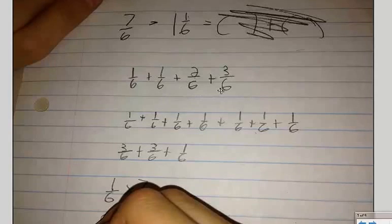1 sixth, 1 sixth, 2 sixths and 3 sixths all make 7 sixths. 3 sixths, 3 sixths and 1 sixth also combine to make 7 sixths.